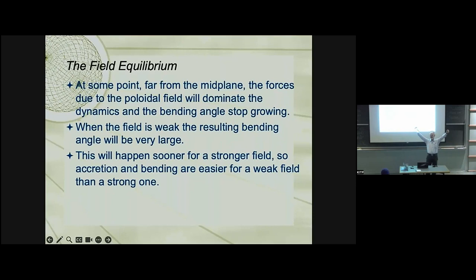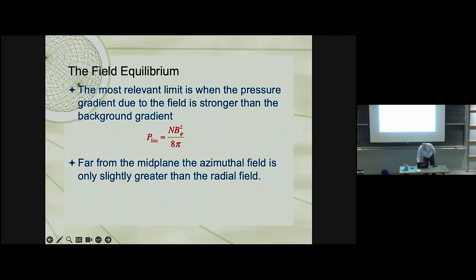It works better for weak fields than for strong fields because stronger fields dominate the dynamics sooner as you go outward from the mid plane and cut the process off. So what you expect is that the outer edges of the disk will be huge bending angles, the field lines will be nearly flat. This, by the way, helps drive a wind from the magnetocentrifugal effect. And even if the gas is cold, and as you go inward, the bending becomes less and less as the field becomes more and more concentrated. So let's just skip ahead a little bit.